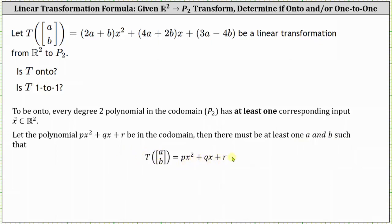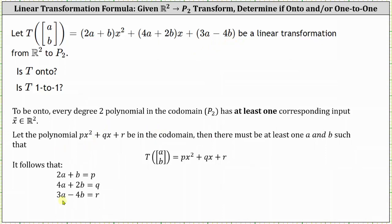Looking back at our transformation, this indicates that 2A + B, the coefficient of x², must equal P; 4A + 2B, the coefficient of x, must equal Q; and 3A − 4B must equal the constant R. This gives us a system of three equations and two unknowns. The coefficient matrix of the corresponding matrix equation is the transformation matrix. If we call this matrix A and write it in reduced row echelon form, a pivot in every row means the transformation is onto.